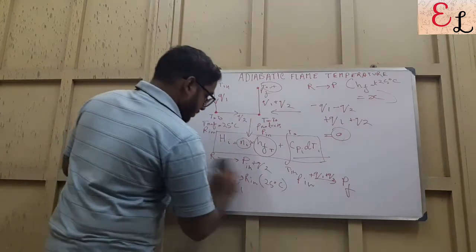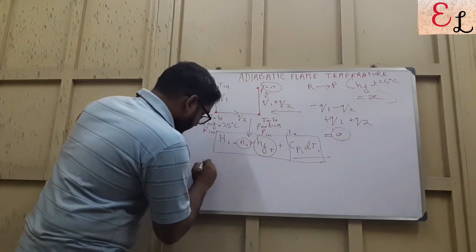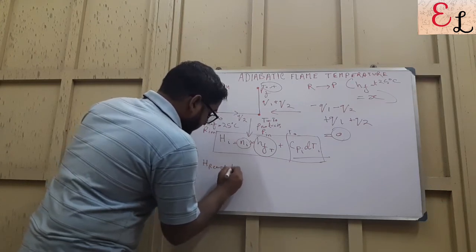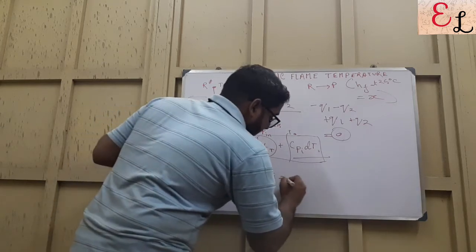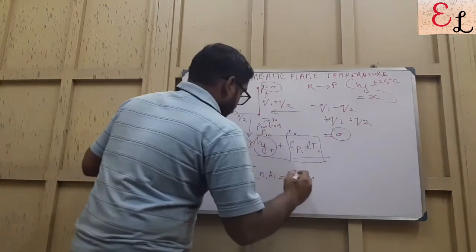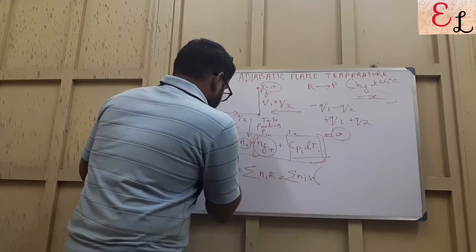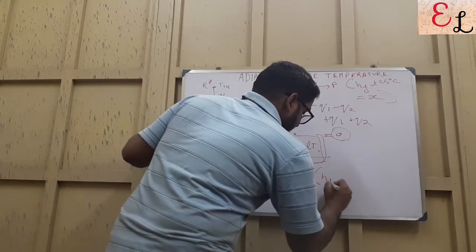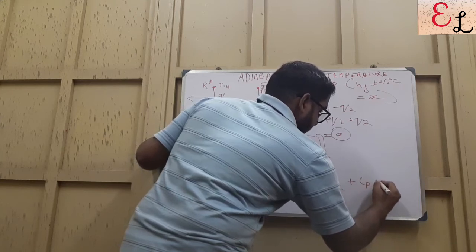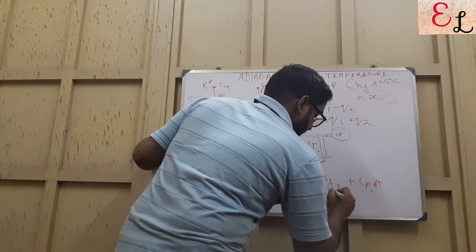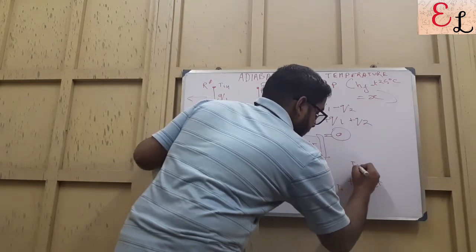And then we account for another amount of heat, that is Ni (the number of moles of this component) into the heat of formation of that component. So for all the reactants at once, H_reactant is nothing but sigma of Ni times Hi, which is sigma of Ni into [H_F(T0) — that is, heat of formation at reference temperature — plus the integral of Cp_i dT from T_in to T0] for individual components.